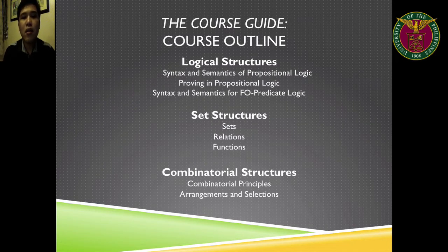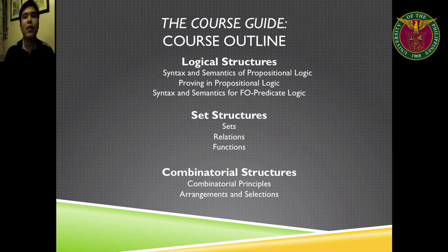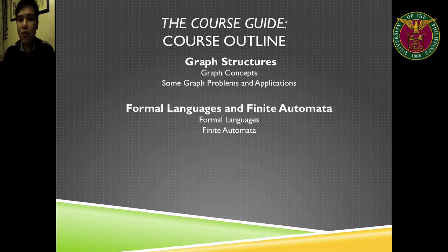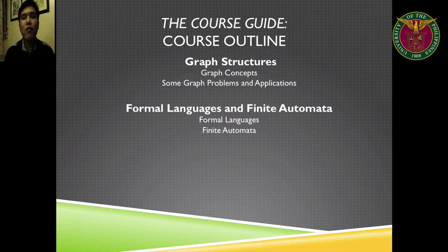Here is the course outline. The first unit is about logical structures — basically propositional logic and predicate logic. The next unit will be about set structures: sets, relations, and functions. The next one would be combinatorial structures or the methods of counting, including arrangements and selections. The next one will be graph structures, where we will talk about different graph concepts like vertices and edges, and tackle graph problems like the shortest path. And finally, we will be dealing with automata in formal languages.